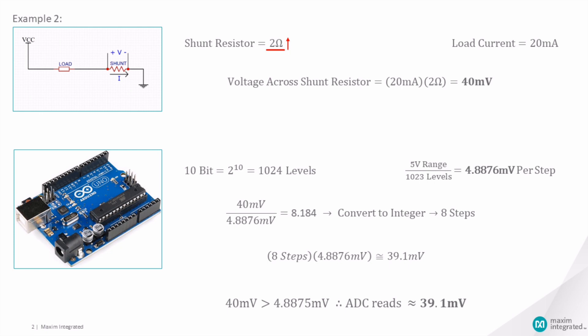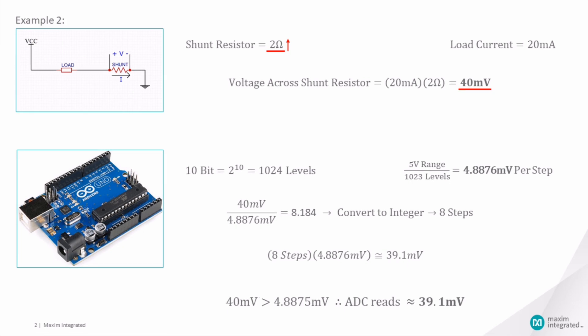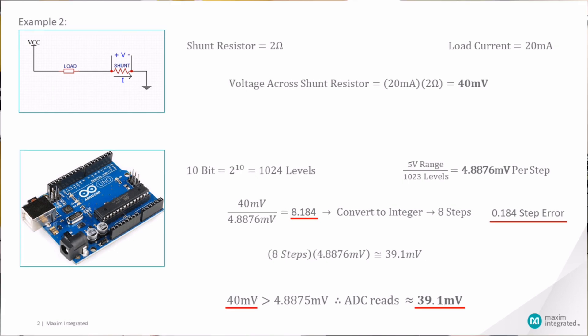Of course, you could increase the resistance of the shunt resistor so that more voltage is dropped across it. For example, if the 200 milliohm resistor is replaced by a 2 ohm resistor, the voltage dropped across it is now 40 millivolts. As this voltage is greater than the Arduino ADC voltage step, the voltage measured by the Arduino is better but still not exactly right.